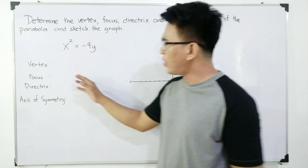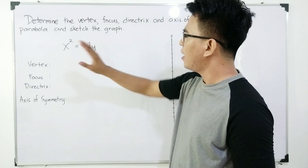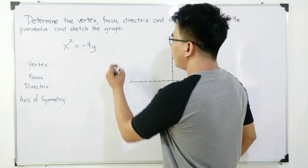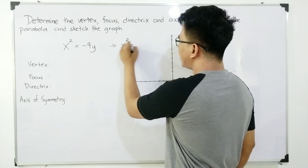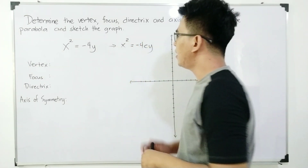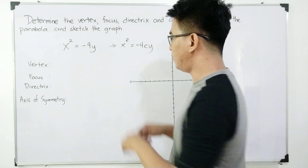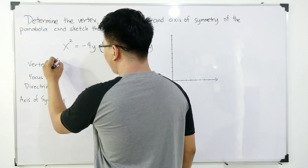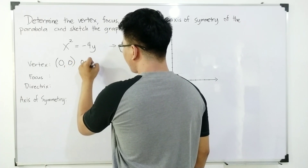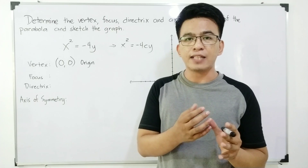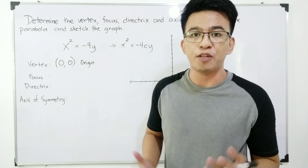Given this equation, we need to identify these parts, and the first one is the vertex. As you can see, x squared equals negative 4y is the same format as x squared equals negative 4cy. Automatically, the vertex of the parabola is at the origin, or (0, 0). That means the vertex — the highest or lowest point of the parabola — is at the center of the Cartesian plane.